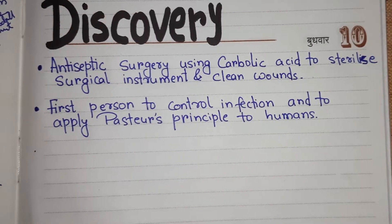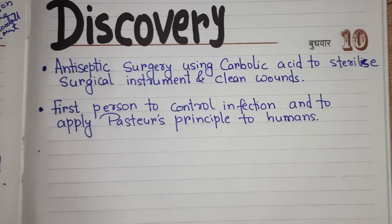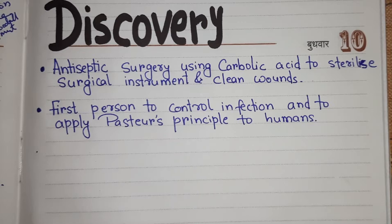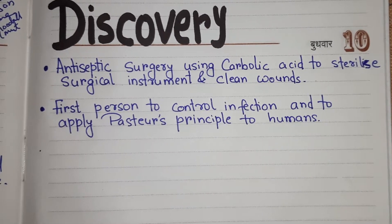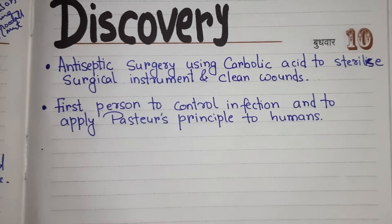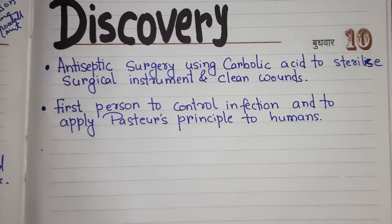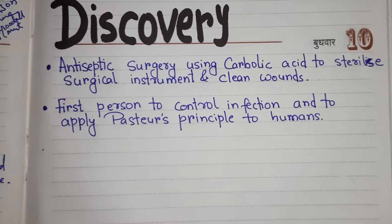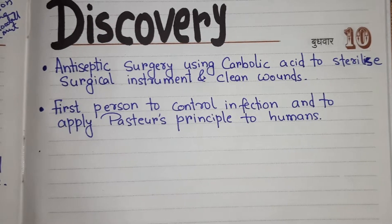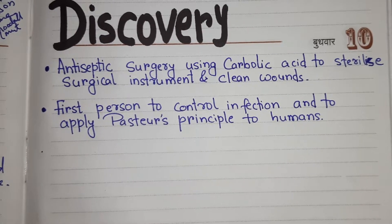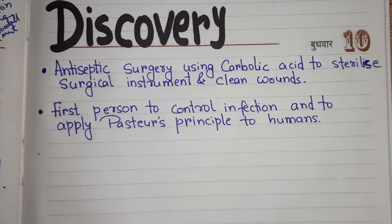He discovered antiseptic surgery using carbolic acid — phenol is known as carbolic acid. He used carbolic acid to sterilize surgical instruments and clean wounds. He was the first person to achieve infection control, and also the first person to apply Pasteur's principles — that is, the germ theory — to humans.